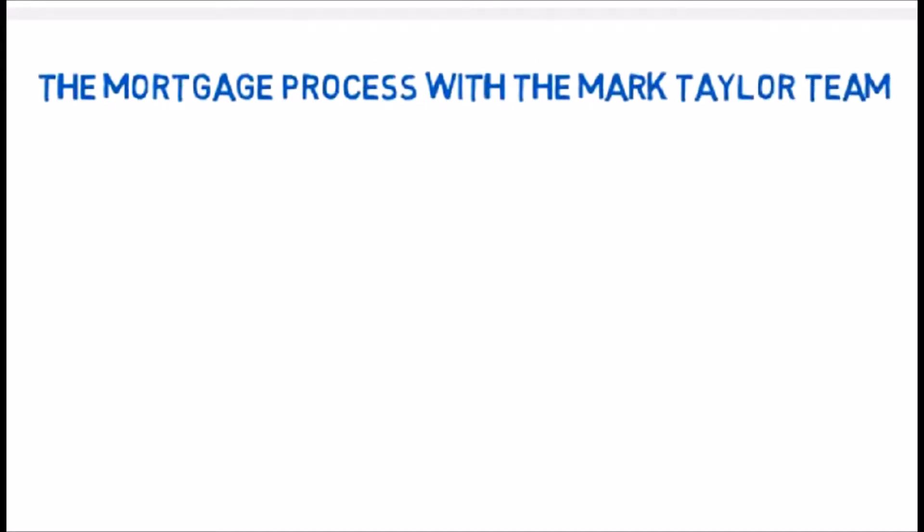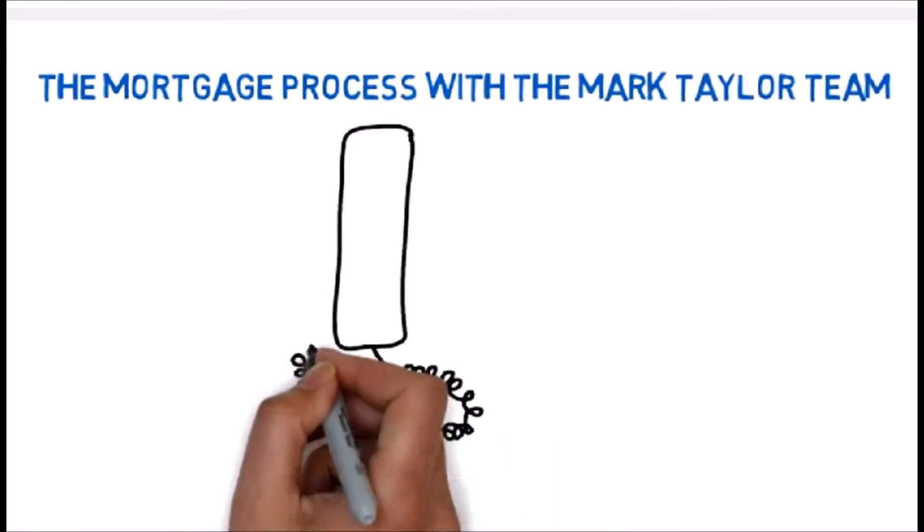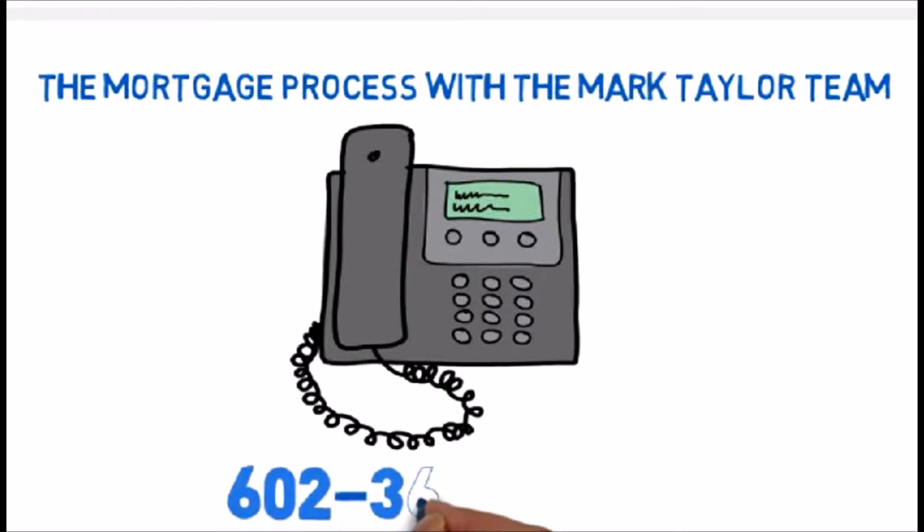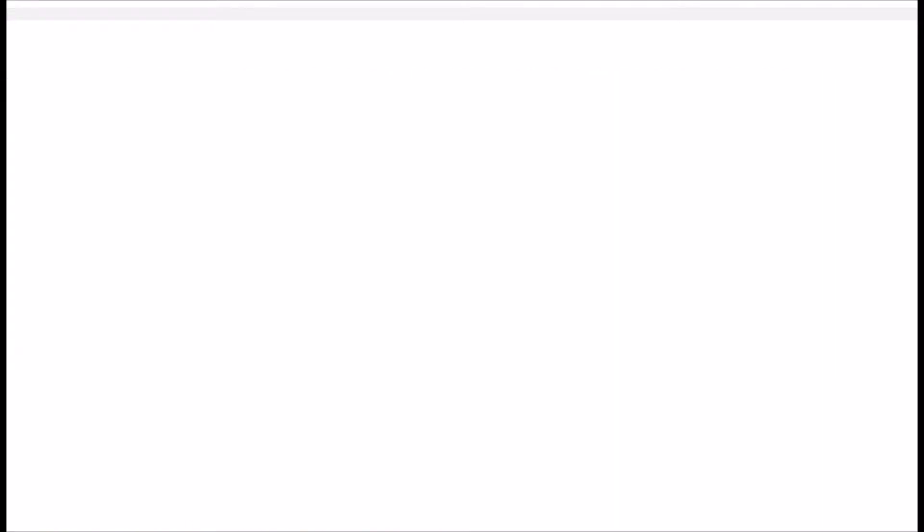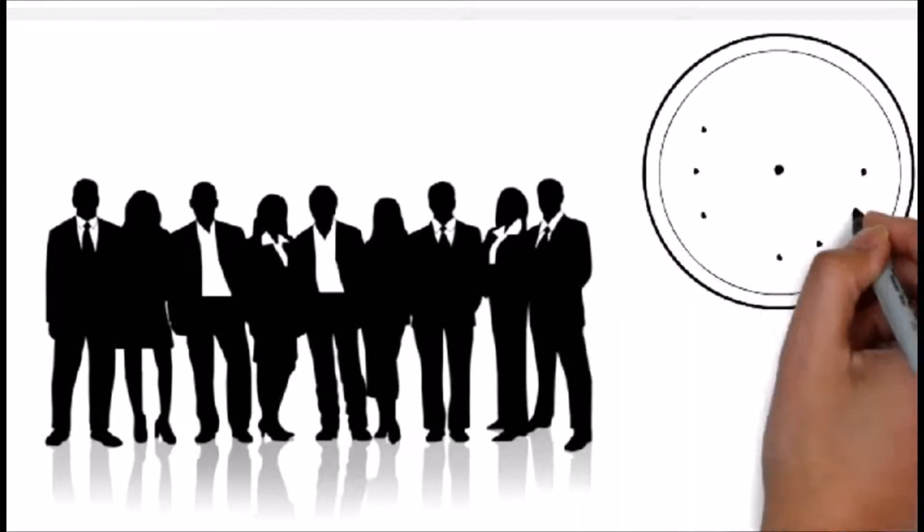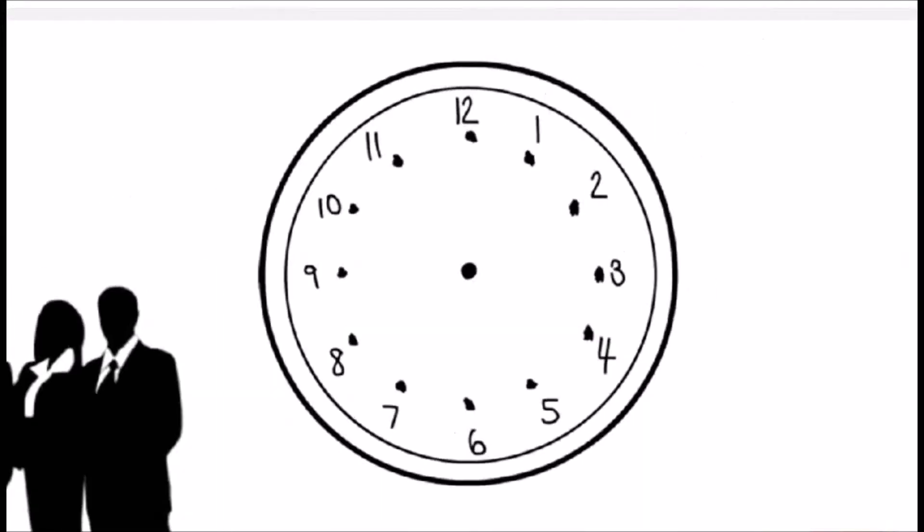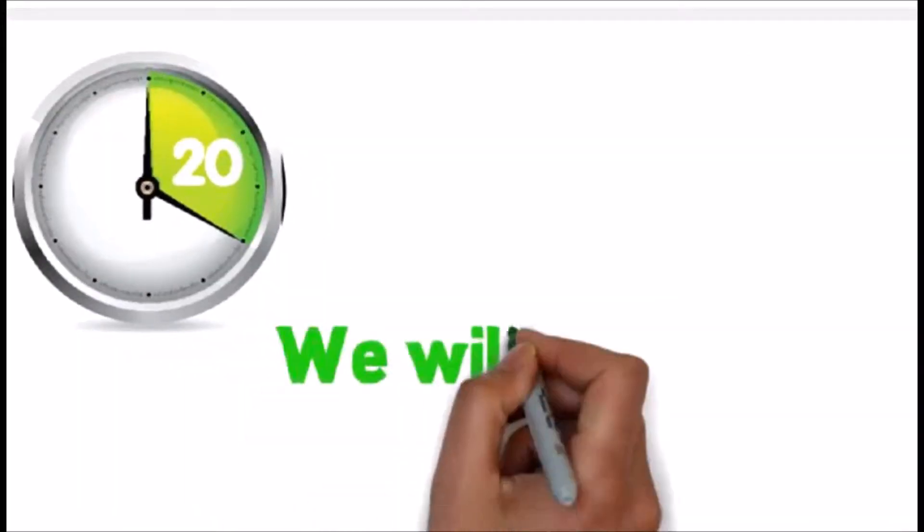The mortgage process with the Mark Taylor team. All you have to do is take our call or call us at 602-361-0707. Talk to one of the team with your questions. Let us take a full loan application and pull a TriMerge credit report. It only takes 20 minutes of your time.